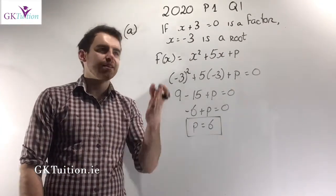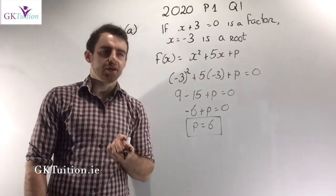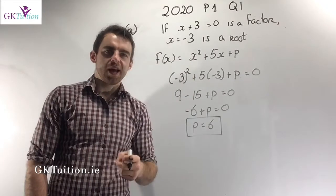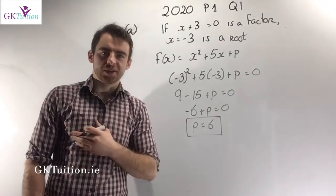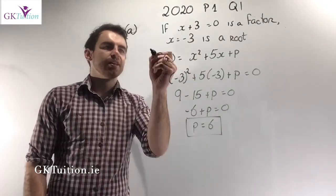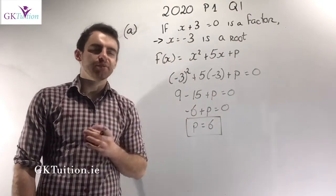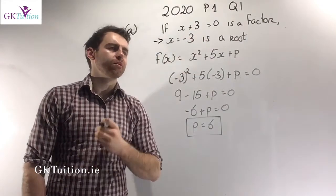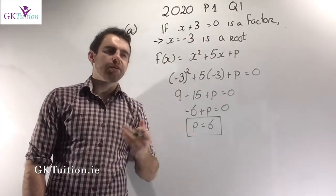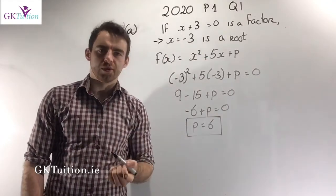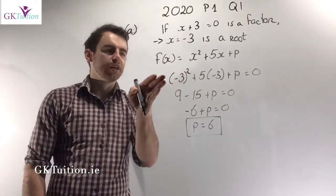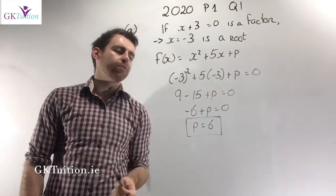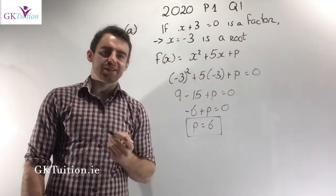Now there are two different ways of doing this. If x plus 3 is a factor, you could carry out long division — divide x plus 3 into the quadratic and let your remainder equal 0. However, that's far more difficult than the second alternative. It's way easier to convert the factor into a root. If x plus 3 equals 0, you subtract 3 from both sides, meaning x equals minus 3 is a root. So you sub in x equals minus 3, let the whole thing equal 0, and you end up with p is equal to 6.